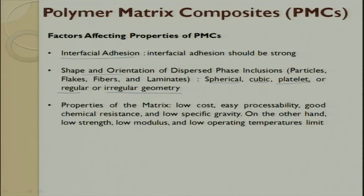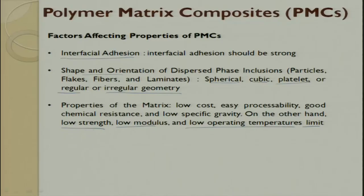Properties of the matrix include costing, easy processability — thermosets are easy to process while thermoplastics are difficult — good chemical resistance, and low specific gravity. These are important factors when deciding polymer matrix nano composites for a required application. On the other hand, low strength, low modulus, and low operating temperature limits the usage of a particular polymer. Based on the requirement, we decide whether to use a thermoset, thermoplast, or elastomer.